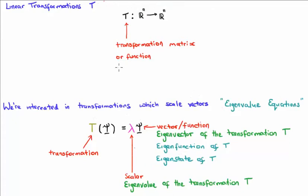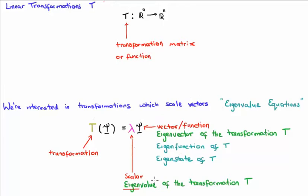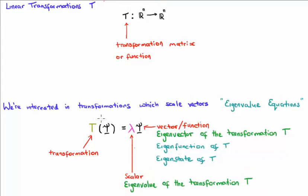So perhaps eigenstate is the most general term, but you'll hear people say eigenfunction or eigenvector. When your linear transformation acts on your eigenstate it produces the same eigenstate with a multiplicative scalar. We once again add the prefix eigen and refer to this scalar as an eigenvalue of the linear transformation T. So our linear transformation acts on our eigenstate and produces the same eigenstate with a multiplicative constant known as the eigenvalue.